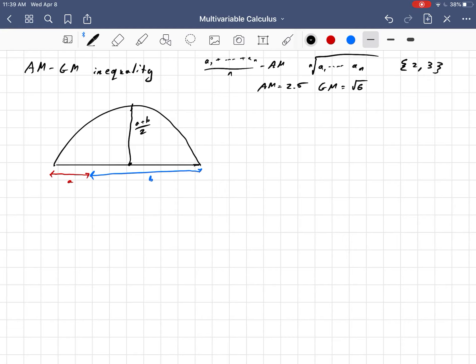How do I know that? It's the radius, right? The whole diameter has to be A plus B because it's got the whole length of A plus B, and then divide that by 2 to get the radius of the semicircle.